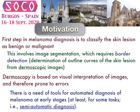The first step in diagnosis is to classify the skin lesion as being benign or malignant, and this involves image segmentation, which requires border detection — basically determining the border of the skin lesion from dermoscopic images and distinguishing the lesion from the image background. This procedure is based on the visual interpretation of images and therefore is prone to errors, making it important to develop a semi-automatic computer-based diagnosis method.